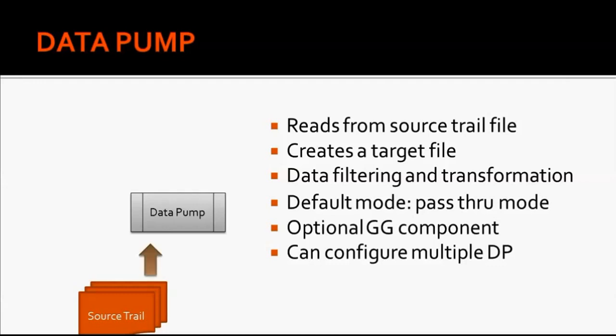Data pump is an optional component of Golden Gate, but it is good to configure it even in pass-through mode. When data pump is not configured, the extract process will send data to target servers, but if there is any network issue the extract process will fail and it will not create any source trail files. If data pump is configured, any network issue will only impact the data pump process, and the extract process will continue to create source trail files. When the network is restored, the data pump sends data over the network. Each component of Golden Gate can be scaled up or scaled down, and you can configure multiple data pump processes as per the requirement.